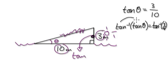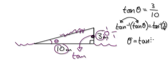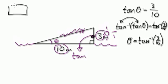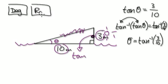These two — tan and inverse tan — are going to cancel each other out, just leaving you theta. So theta equals inverse tan of 3 over 10. Remember, on your calculator make sure it's in degrees — deg — not radians.